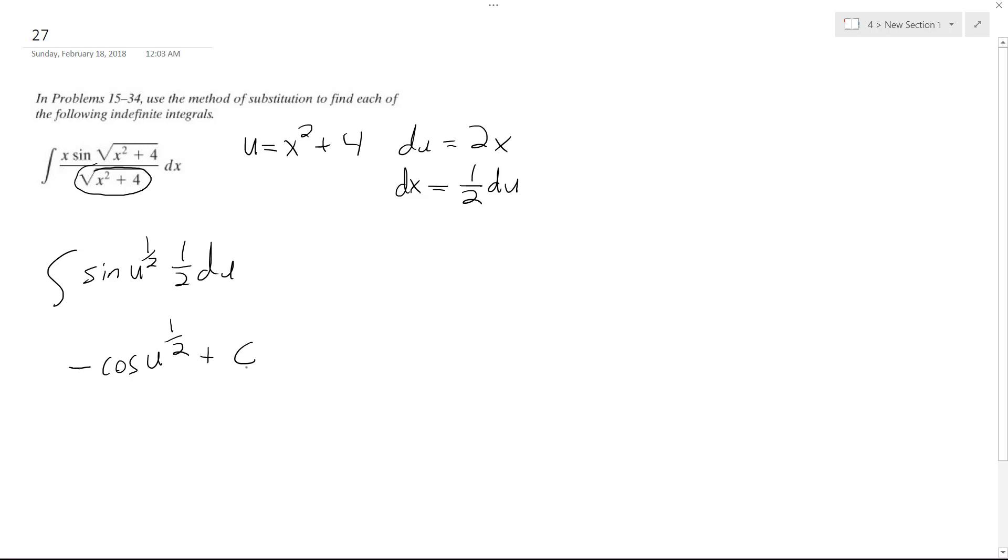So ultimately, what we're going to end up with is, it turns out pretty easy and nice. We get negative cosine of the square root of x raised to the second plus 4 plus c. And that's it.